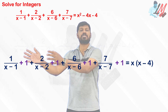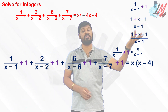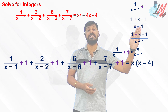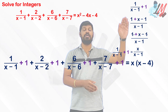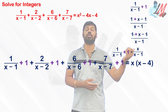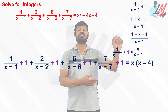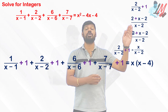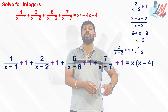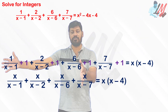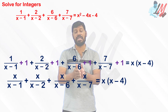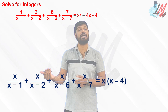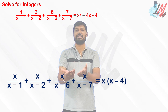So we get [1/(x−1) + 1] + [2/(x−2) + 1] + [6/(x−6) + 1] + [7/(x−7) + 1]. Taking the first pair, 1/(x−1) + 1: the LCM is (x−1), giving (1 + x−1)/(x−1) = x/(x−1). Similarly, 2/(x−2) + 1 = x/(x−2). After simplifying all four pairs, we get x/(x−1) + x/(x−2) + x/(x−6) + x/(x−7).